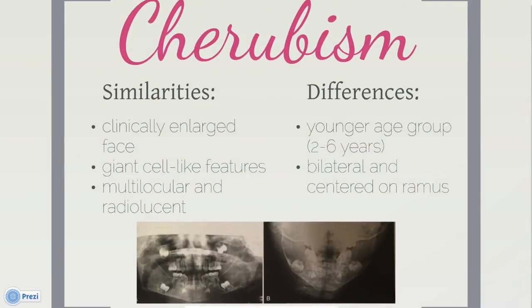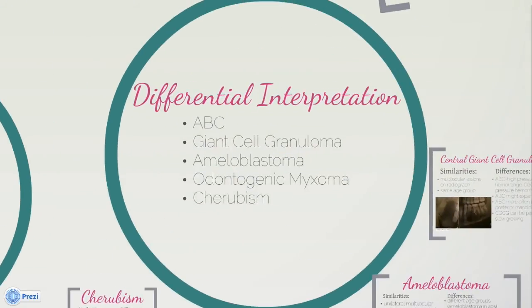Like aneurysmal bone cysts, cherubism clinically shows an enlarged face, but typically develops in children 2 to 6 years of age — much younger than ABC. It also demonstrates giant cell-like features and could be a differential interpretation due to its radiographic appearance, but unlike aneurysmal bone cysts, it is bilateral and generally centered on the ramus. Since aneurysmal bone cysts can have a large variety of radiographic and clinical presentations, several differential interpretations could exist. The final interpretation for ABC relies on three factors: radiographic, histologic, and clinical. The final interpretation would be based on a multilocular, unilateral lesion with giant cell histology and a quickly growing painful mass visible on the outside of the face.